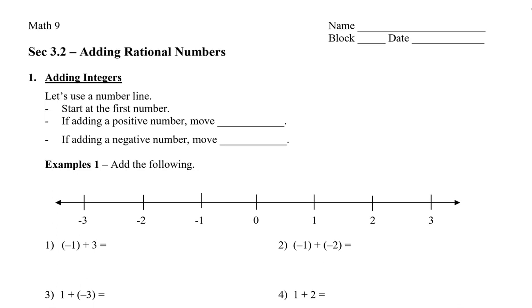So if we're using a number line, remember we start at the first number. If we're adding a positive number, we're going to move to the right. If we add a negative number, we're going to move to the left.